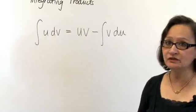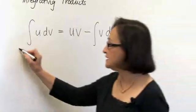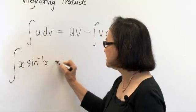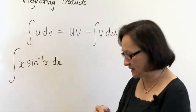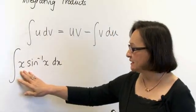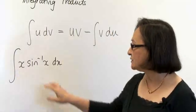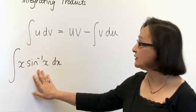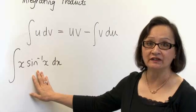An example where we would use integration by parts is the integral of x sine to the minus 1 of x dx. The x in this integrand is not a derivative of sine to the minus 1 of x, so we can apply integration by parts to solve this integral.